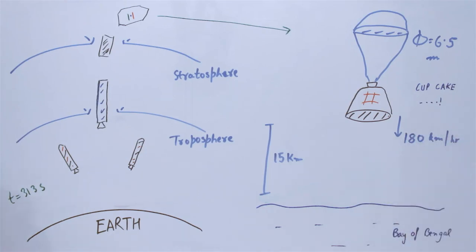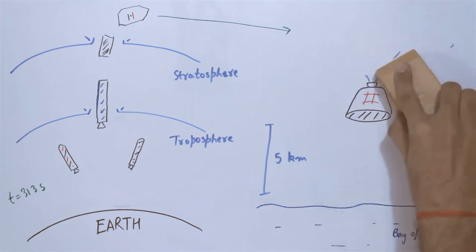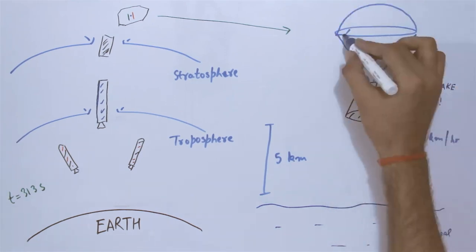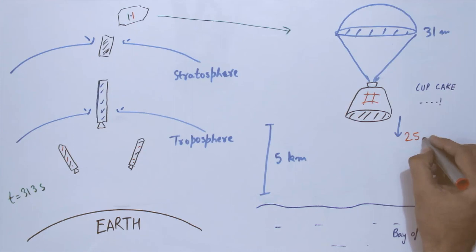At a height of 5 kilometers, the main parachutes, which have a diameter of 31 meters, are deployed. These slow down the capsule to 25 kilometers per hour before splashdown.